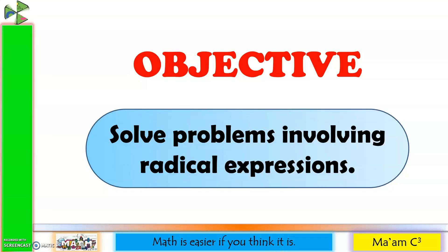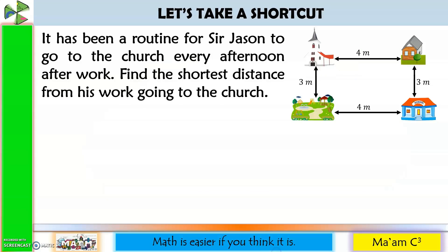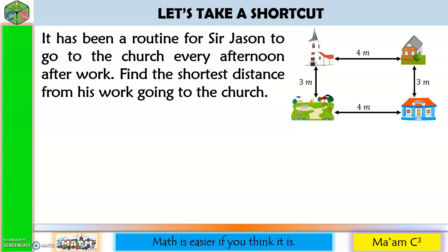Our objective in this lesson is to solve problems involving radical expressions. First one: it has been a routine for Sir Jason to go to church every afternoon after work. Find the shortest distance from his work going to the church. Sir Jason is a teacher who goes to church every day to give thanks. We are asked to determine the shortest distance going to the church from the school where he works.